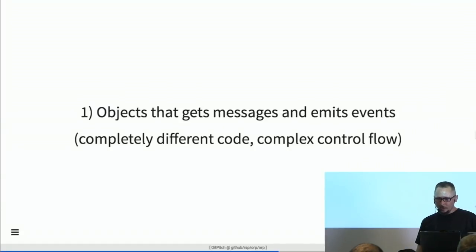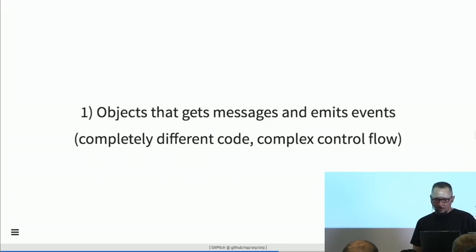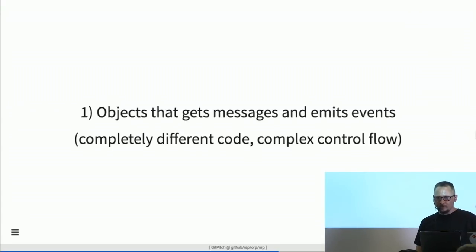My first take was to create objects that receive messages and emit events — going back to the original idea of message passing. It seemed natural to implement them as APIs that pass messages and emit events in response. But it was inconvenient — completely different code, and it gets complicated quickly to control events inside events. It's not a very good substitute for a function call that returns a value.